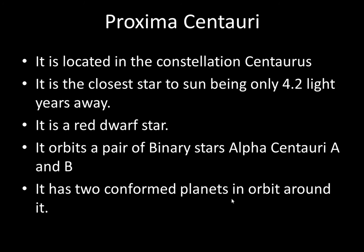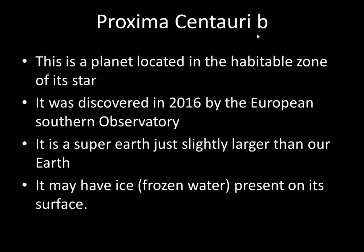Let's continue with its planets. The first planet is Proxima Centauri B. It is located in the habitable zone of its star. It was discovered in 2016 by the European Southern Observatory. It is a super-Earth, just slightly larger than our Earth. It may have ice or frozen water present on its surface, and maybe also liquid water — but that is not so sure.